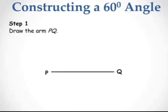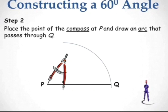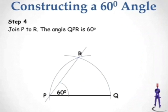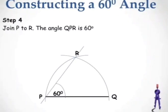Next, constructing an angle of 60 degrees. Step 1: draw the arm PQ of any length. Step 2: place the point of the compass at P and draw an arc that passes through Q. Place the point of the compass at Q and draw an arc that passes through P. Let this arc cut the arc drawn in step 2 at R. Join P to R — the angle QPR is 60 degrees. This is the required angle.